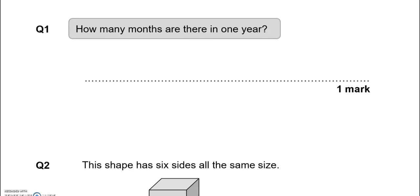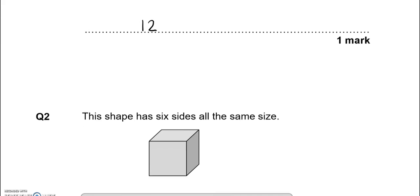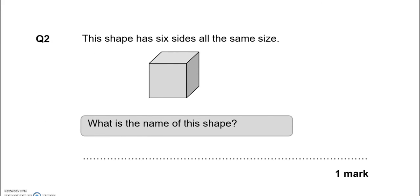How many months are there in one year? 12. This shape has 6 sides all the same size. What's the name of this shape? Cube.